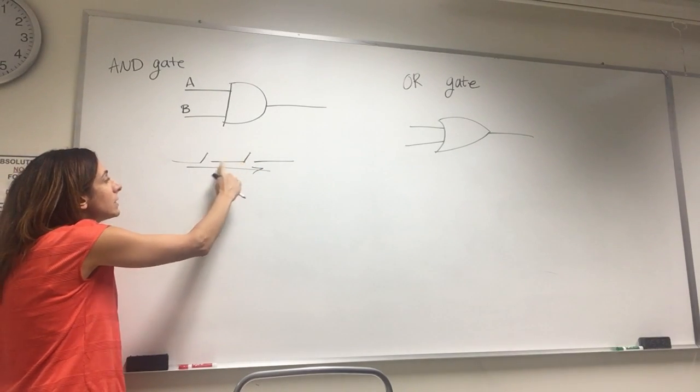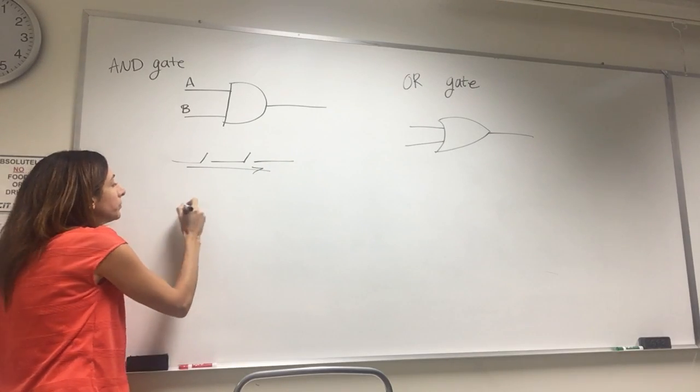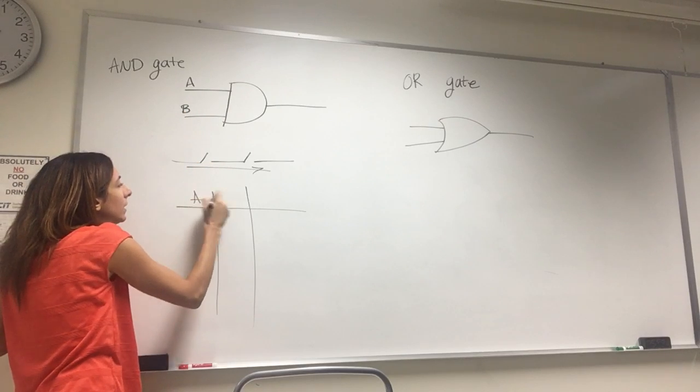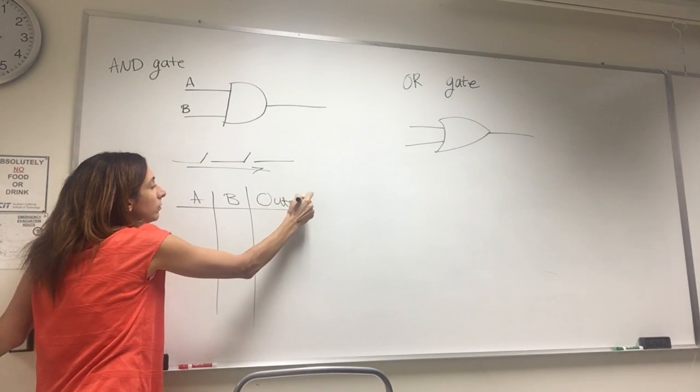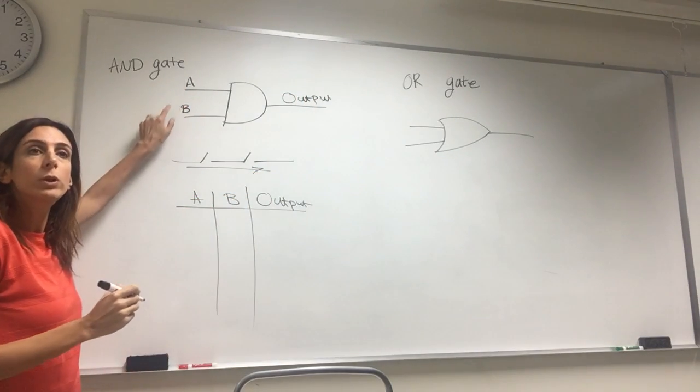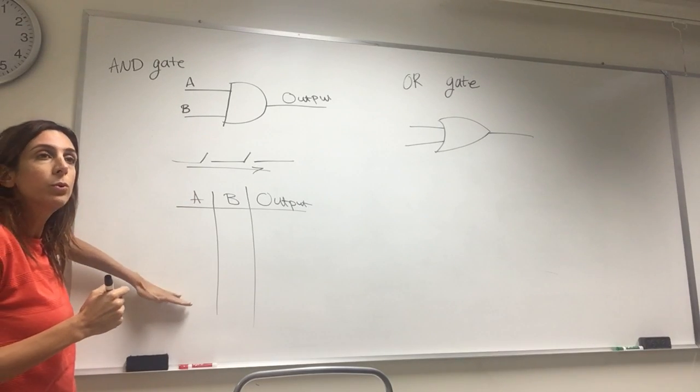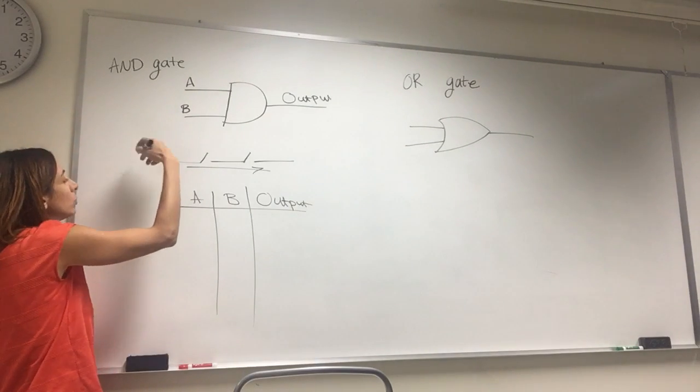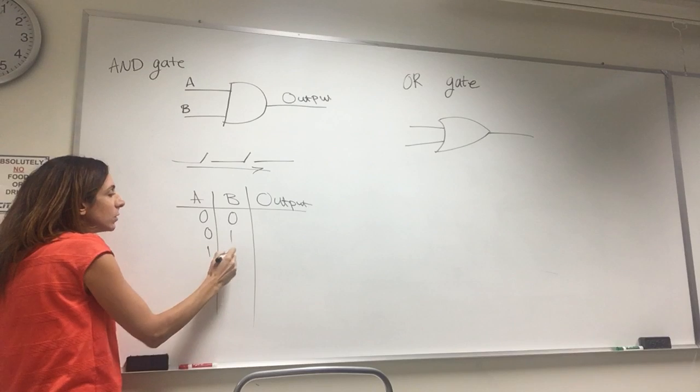So that's the only case, that's the case that my output will be, I won't basically have any output. So I have two inputs A, B, output. So when I have two inputs, how many combinations I have for my inputs that I can have? Four. Because two inputs, two power of two is four. So I can have zero, zero, zero, one, one, zero, one, one.